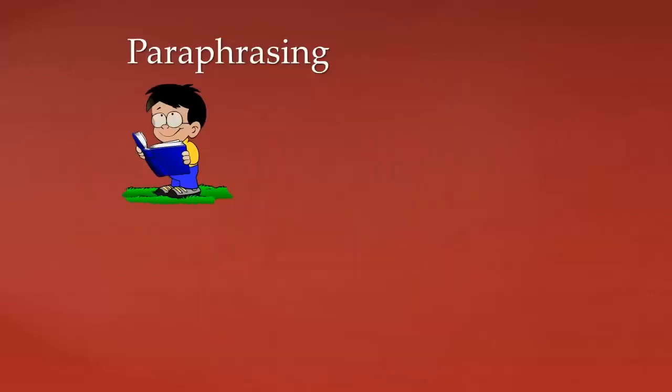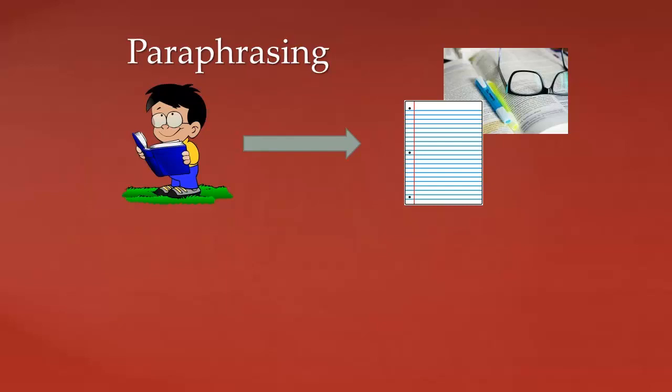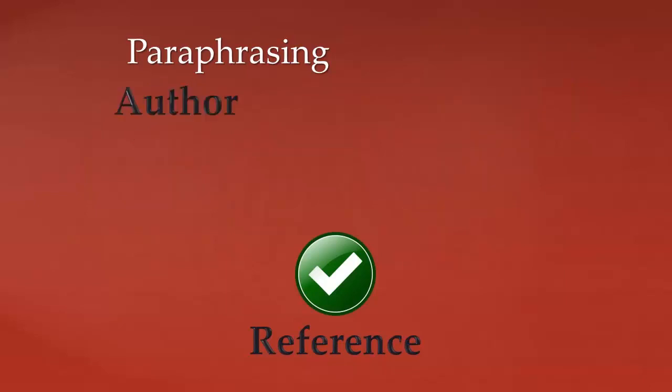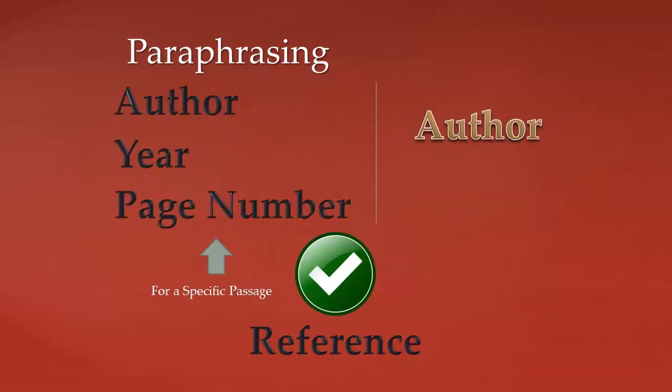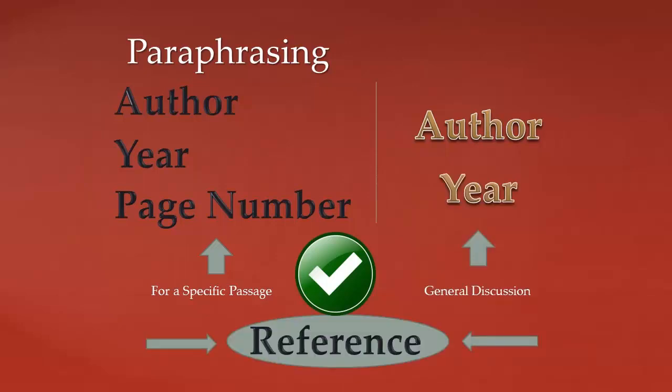Paraphrasing means to read someone else's work and then to highlight the main points in your own words. If you paraphrase, you still need to provide a reference. If you are highlighting a specific passage, you will need the author, year of publication, and the page number. If you are just generally discussing the work, usually just the author and the year will do. Again, check the guidelines of your referencing style to make sure you get it right.